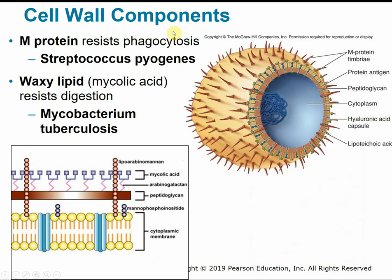Certain cell wall components may also help bacterial pathogens penetrate host defenses. The M protein, for example, consists of spike proteins on the surface of some cells that mediate attachment to the host cell while resisting phagocytosis — similar to the capsule, it makes it harder for macrophages and immune cells to eat these pathogens.